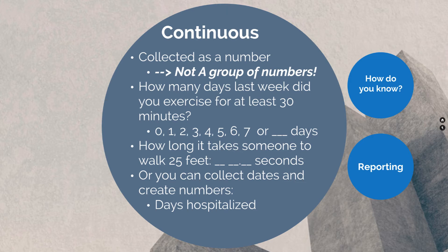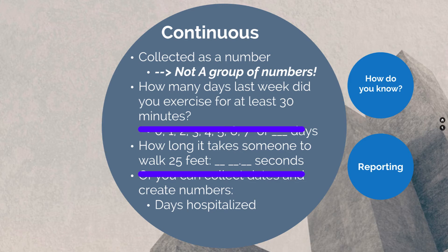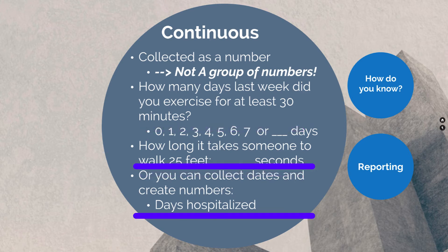For example, 'How long does it take someone to walk 25 feet?' — you would use a stopwatch, mark out 25 feet, press start, and stop when they cross the 25-foot threshold. This is a continuous numeric response. You can also collect dates and create number of days or months from them — such as days hospitalized, using an admission date and a discharge date to determine how many days someone was in the hospital.